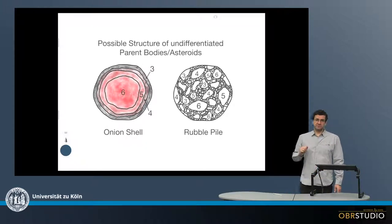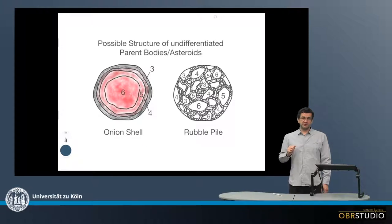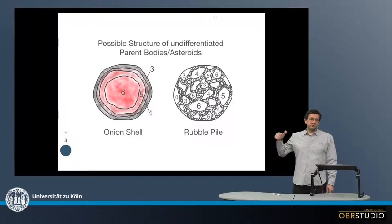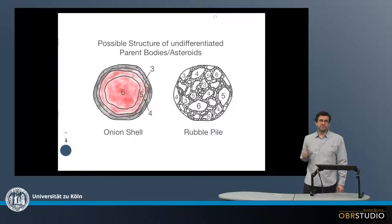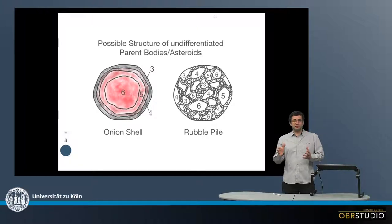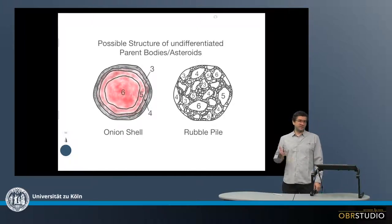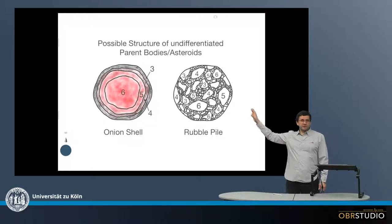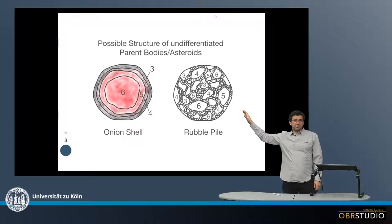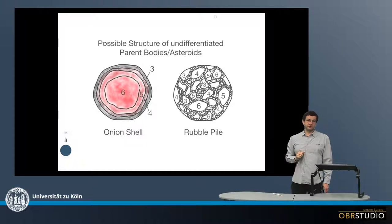The undifferentiated meteorite parent bodies did not melt completely, and there are two main structures suggested for how these asteroids looked — or even look. The one is the onion shell model, and the other one on the right is the rubble pile.